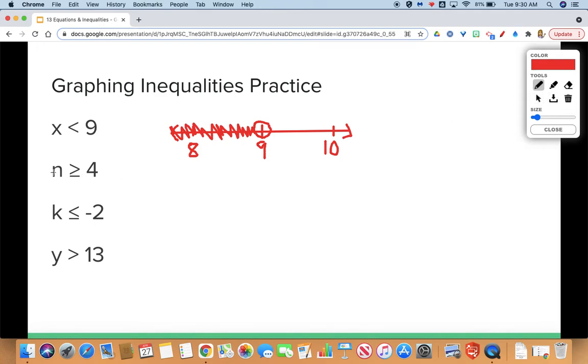Let's try this one. N is greater than or equal to 4. I'm going to make my number line with 3 tick marks. 4 being my center number. One down and one up on either side. I'm going to put a dot above 4 and this time it's a greater than or equal to. So I'm going to shade that dot in because 4 could be a possible solution for N.